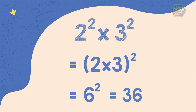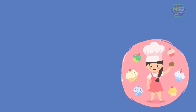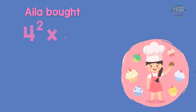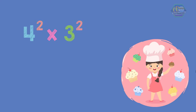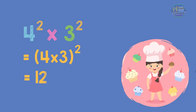Another example: Ayla went to the bakery to buy some cupcakes. Ayla bought 4 raised to the power of 2 times 3 raised to the power of 2 cupcakes. How many cupcakes did Ayla buy? The equation has different bases but the same exponent. Therefore, using Law 3, we can just multiply the bases and then copy the exponent. The equation will become 12 raised to the power of 2, which is equal to 144. Therefore, Ayla bought 144 cupcakes.